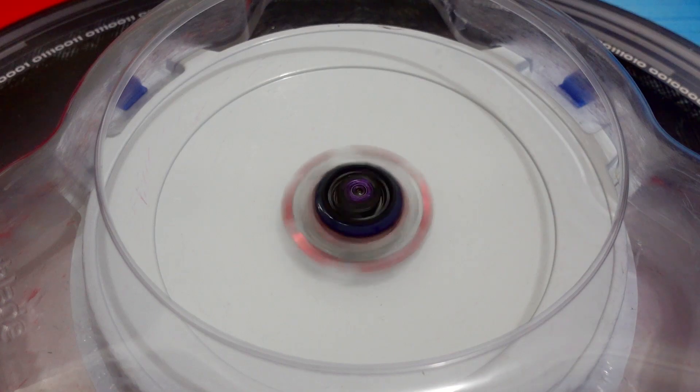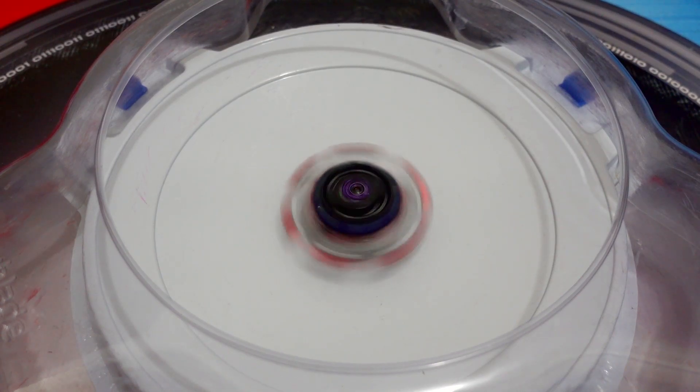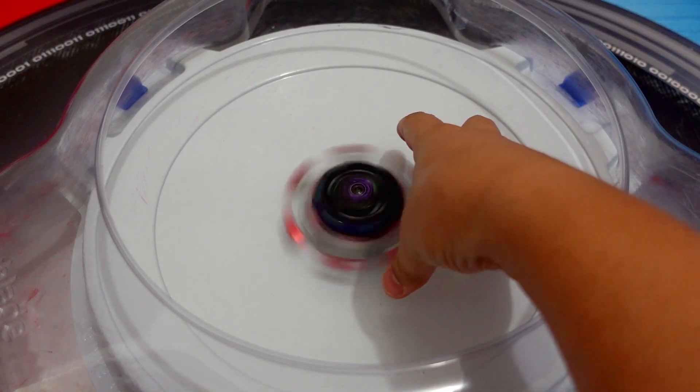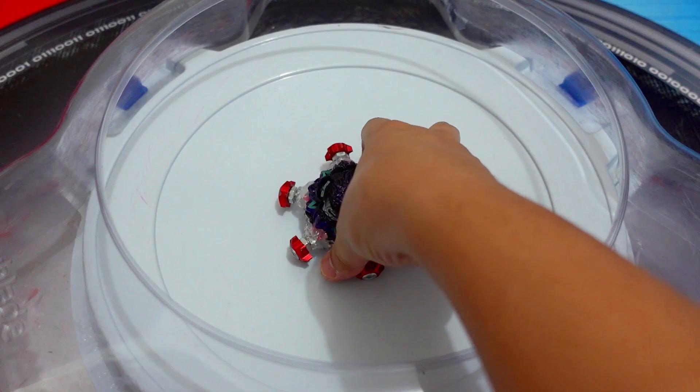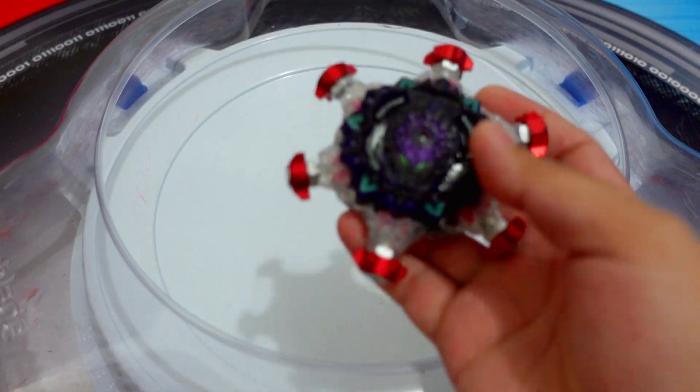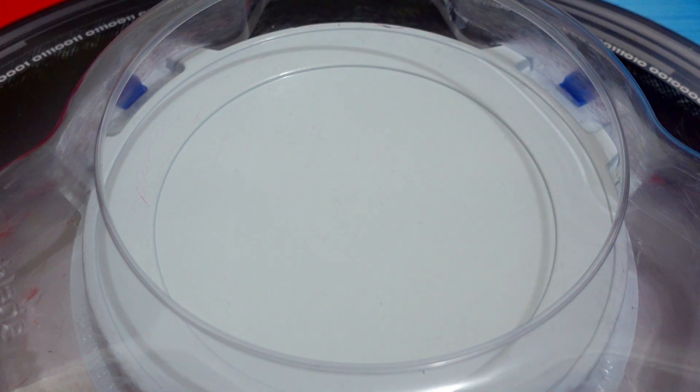3-0, right? Okay guys, it's already 3-0 and I guess the Metal Barrier, when it's hitting the opponent's beyblade, then it will really go out of the stadium. 3-0.